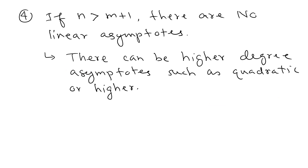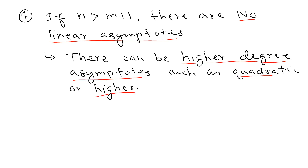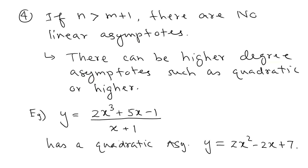There is a fourth case: if n is more than m + 1, there are no linear asymptotes at all, but there can be higher-degree asymptotes — for example, quadratic or cubic asymptotes. For instance, with (2x³ + 5x − 1) / (x + 1), the numerator degree is 2 more than the denominator, so dividing gives a quadratic quotient, which is the quadratic asymptote. This makes it very clear how things work — and it shows that everything ChatGPT provided was completely incorrect.